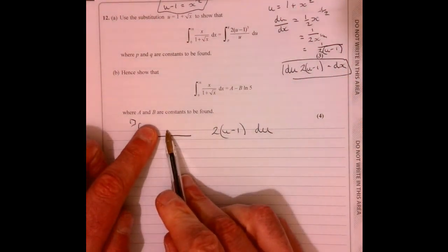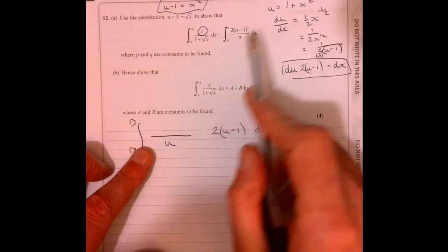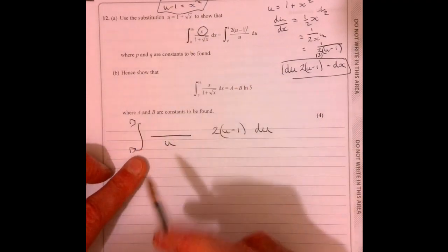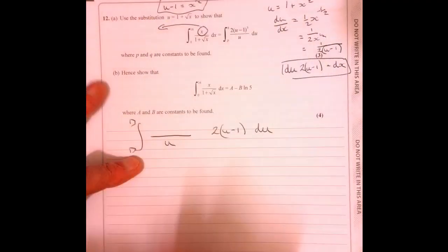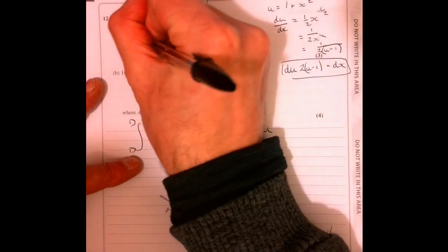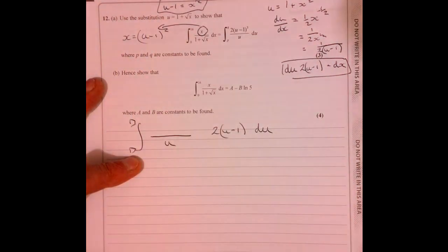So let's write that instead. So that's 2u minus 1 and then that's multiplied by du. Right. What's going to go just here? Well, I need x to go there, but it's not going to be useful if I put x there. But I know that root x is equal to u minus 1. So therefore, if I square root x and I've got x, haven't I?